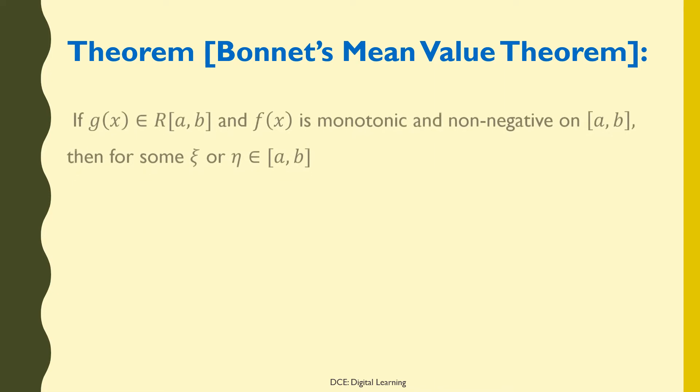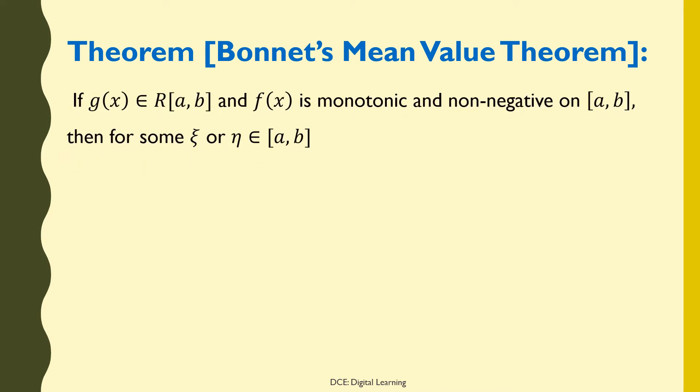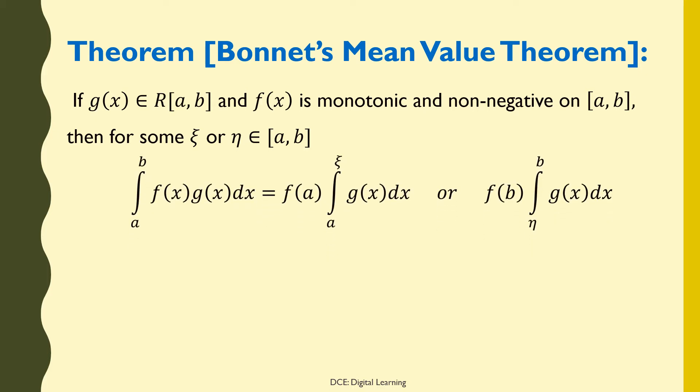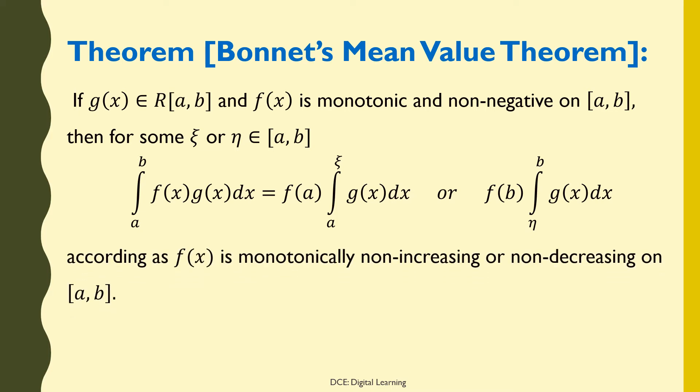Bonnett's mean value theorem: if g(x) belongs to Riemann integrable functions on closed interval [a, b] and f(x) is monotonic and non-negative on [a, b], then for some η belonging to [a, b], the integral of f(x)g(x) dx from a to b equals f(a) times the integral of g(x) dx from a to η, or f(b) times the integral of g(x) dx from η to b, according as f(x) is monotonically non-increasing or non-decreasing on [a, b].